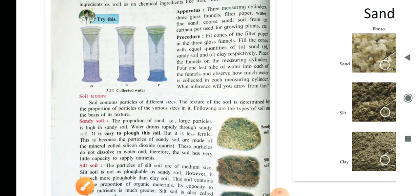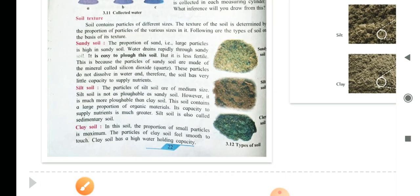Now, let us go to the concept of soil texture. Soil texture. Soil contains particles of different sizes. The texture of the soil is determined by the proportion of the particles of the various sizes. Following are the types of soil on the basis of its texture.